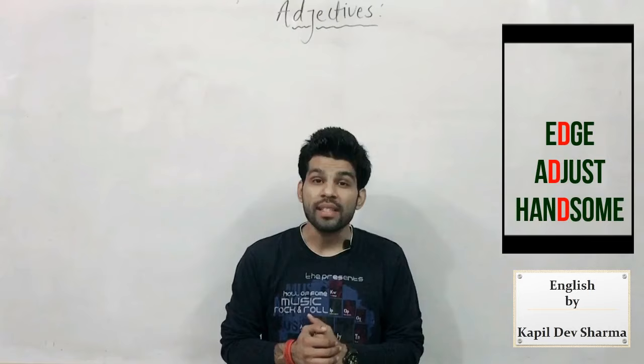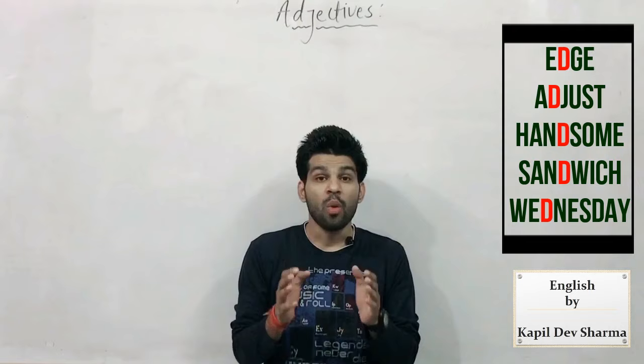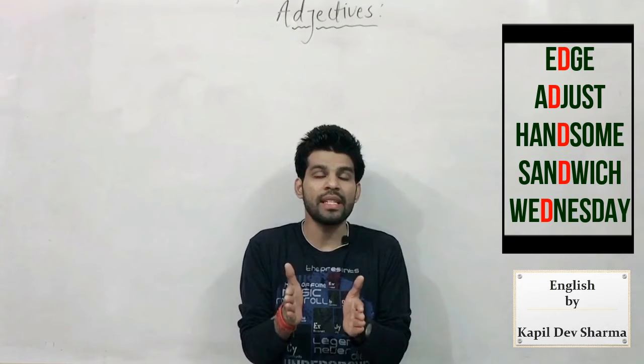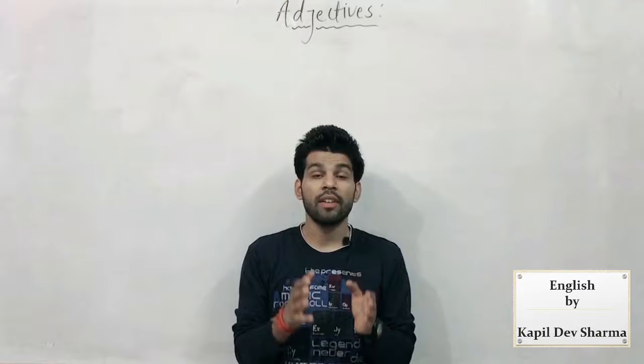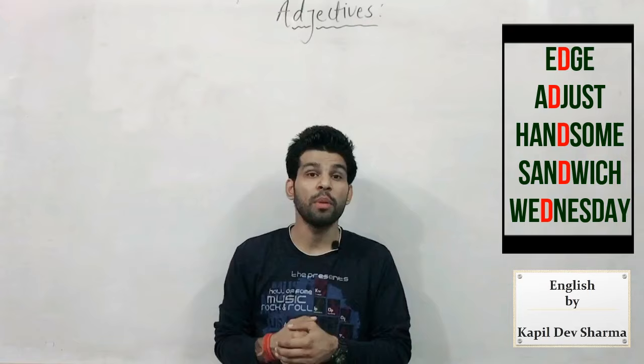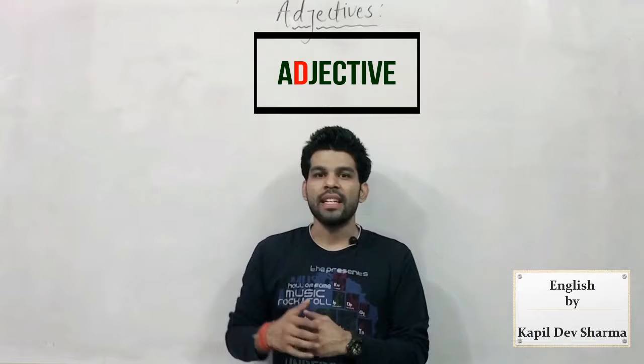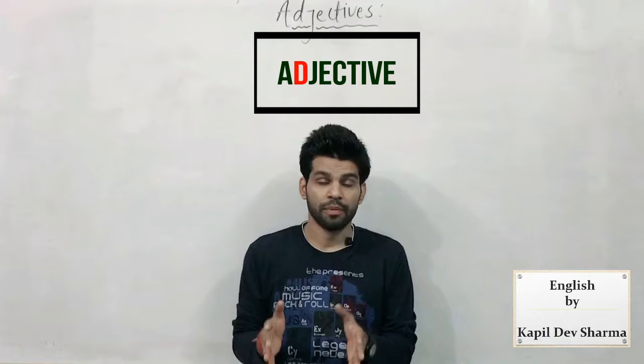और हमारे daily life के quite common words में से एक है — 'Wednesday'. We call that 'Wednesday' — ना कि 'Wednesday'. कई लोग D silent है यह जानकर 'Wensday' बोलते हैं — वो भी 'Wednesday' नहीं होता। That is 'Wednesday'. उसकी spelling है W-E-N-Z-D-A-Y sound के हिसाब से। तो similarly, D के absence के साथ pronounce करिए — so this is 'adjective', not 'adjective'।